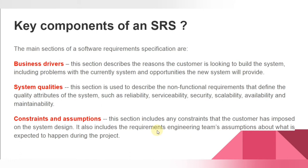The third key component is constraints and assumptions. This section includes any constraints the customer has imposed on the system design, as well as the requirements engineering team's assumptions about what is expected during the project. Constraint rules, regulations, local laws, government laws, and international laws are specified in this section. The SRS must include laws and constraints imposed by the customer, the government, or international organizations that cannot be violated.